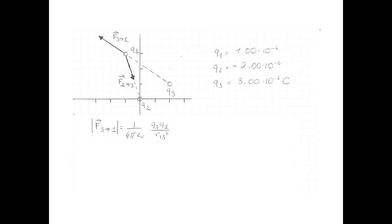First, we calculate the magnitude of the force that 3 exerts on 1. So the formula for Coulomb's Law is 1 over 4 pi epsilon naught q3 q1 over r13 squared. 1 over 4 pi epsilon naught, of course, is the constant, 9 times 10 to the 9.